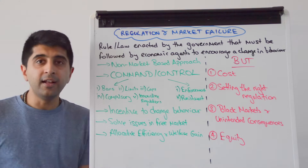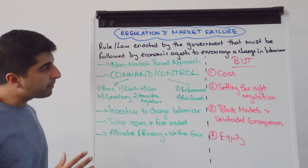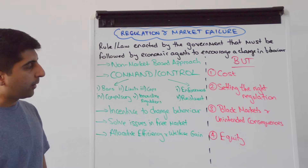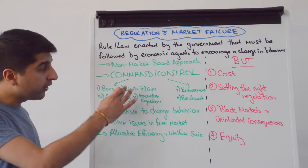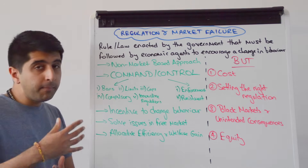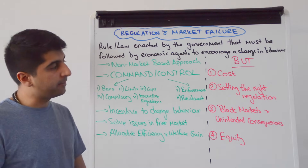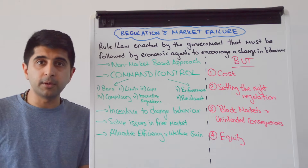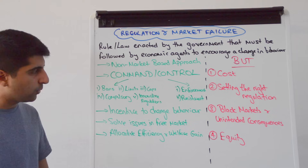Let's focus on the commands — the rules or the laws. Grouping them up, these commands could be bans, like the public smoking ban we see in the UK and many other countries around the world. They could be limits, like age limits on buying cigarettes and alcohol, or time limits on when alcohol can be served. Some countries have those. They could be caps, like emissions caps for firms, or caps on the number of fish that fishermen can take out of the sea at any one time.